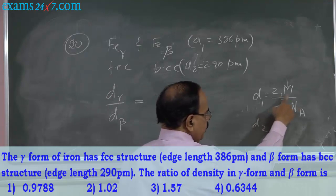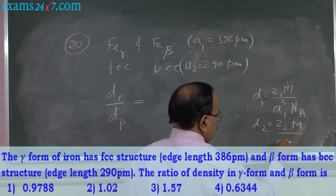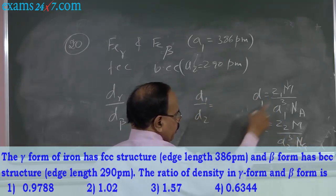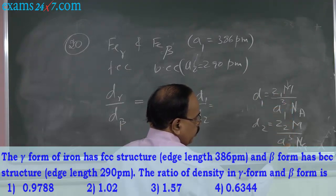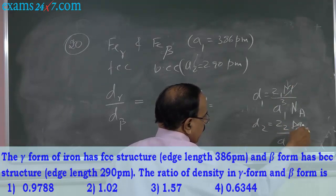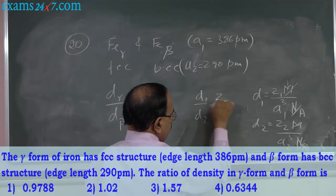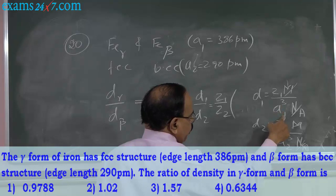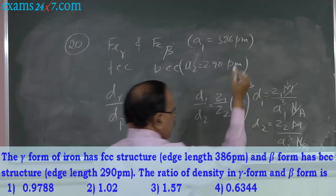So D1 = Z1·M / (A1³·NA) and D2 = Z2·M / (A2³·NA). If you take D1/D2, it equals Z1·M·A2³ divided by Z2·M·A1³. M gets cancelled and NA gets cancelled. What is left is Z1/Z2 and A2³/A1³, therefore it is (Z1/Z2) × (A2/A1)³.